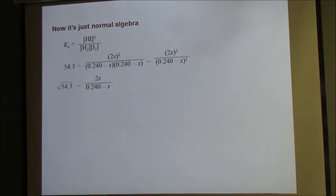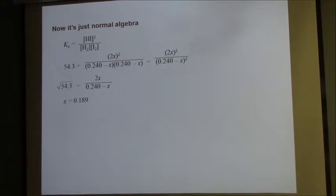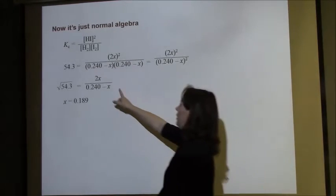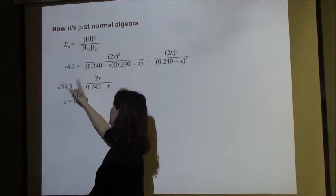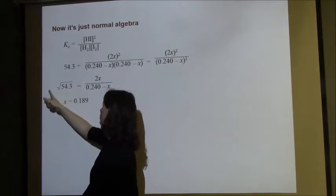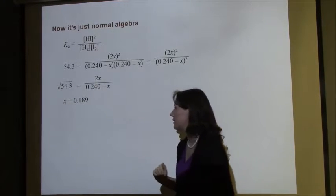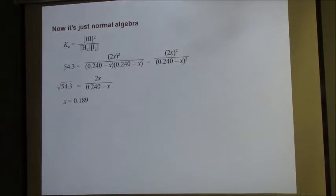The square root of 54.3 is equal to 2X over 0.24 minus X. Now I just do some rearranging. This quantity multiplied over here, then 2X equals this portion, and I rearrange and solve for X. So X equals 0.189.